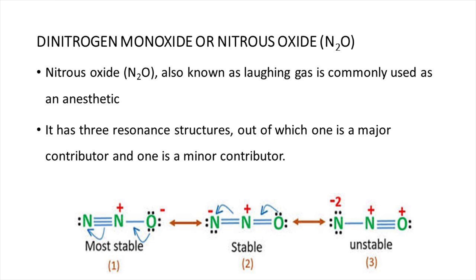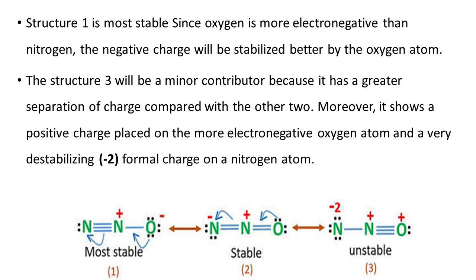Nitrous oxide is also known as laughing gas and is commonly used as an anesthetic. It has three resonance structures, out of which one is a major contributor and one is a minor contributor. Structure 1 is most stable since oxygen is more electronegative than nitrogen, and the negative charge will be stabilized better by the oxygen atom.